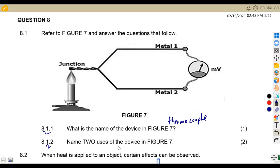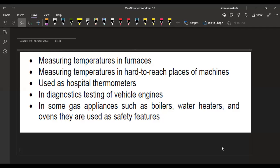Then on 8.1.2, name two uses of the device in Figure 7. If you can't identify this, then it is going to be difficult for you to also know the uses of this device. So what are the uses of the thermocouple? You've got a lot of uses, just pick two of your choice. It can be used for measuring temperatures in furnaces, measuring temperatures in hard-to-reach places of machines, used as hospital thermometers in diagnostics, testing of vehicle engines, in some gas applications such as a boiler, water heater, and oven as safety features.